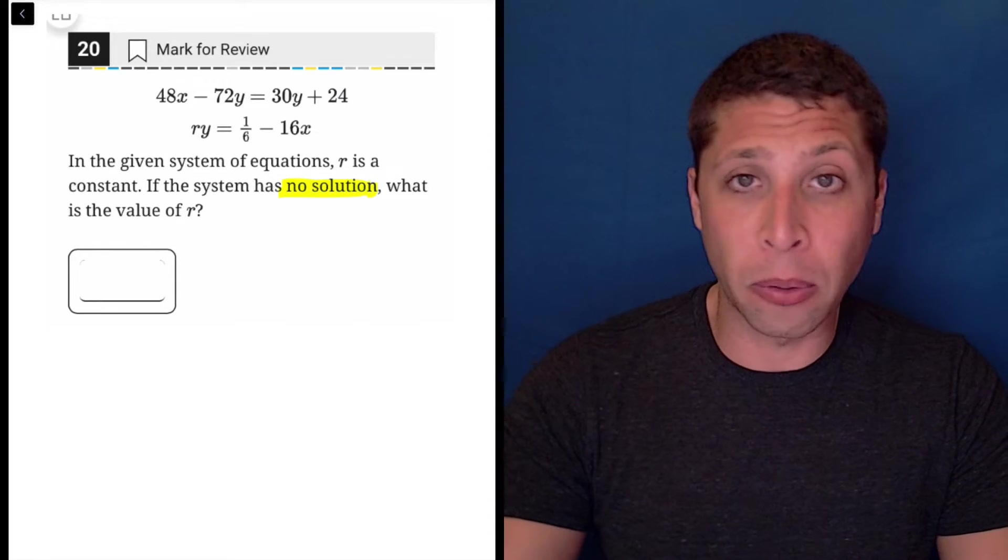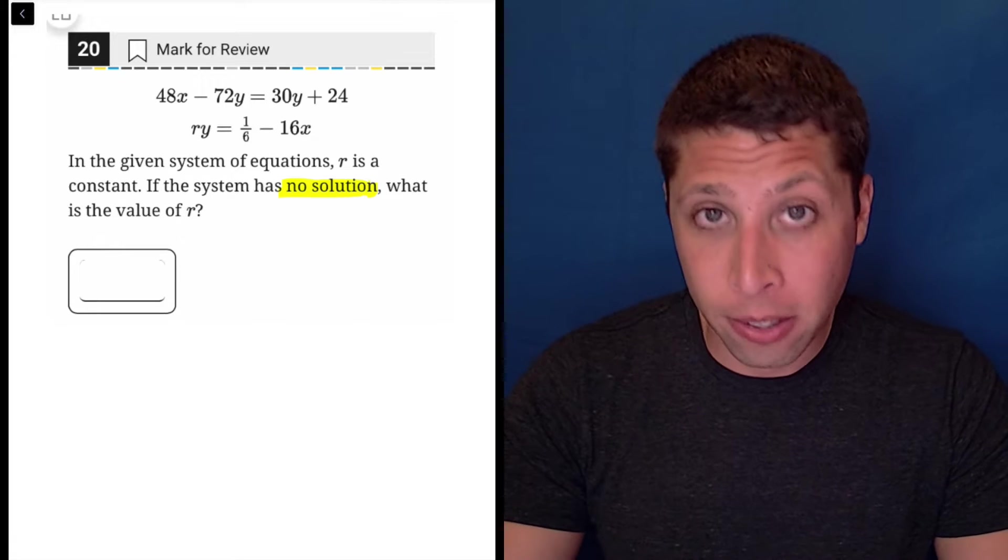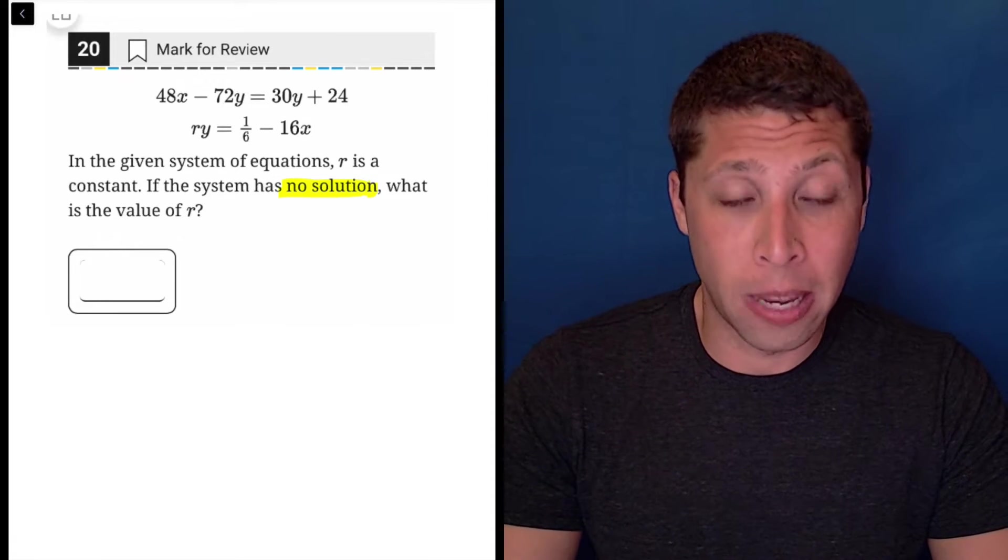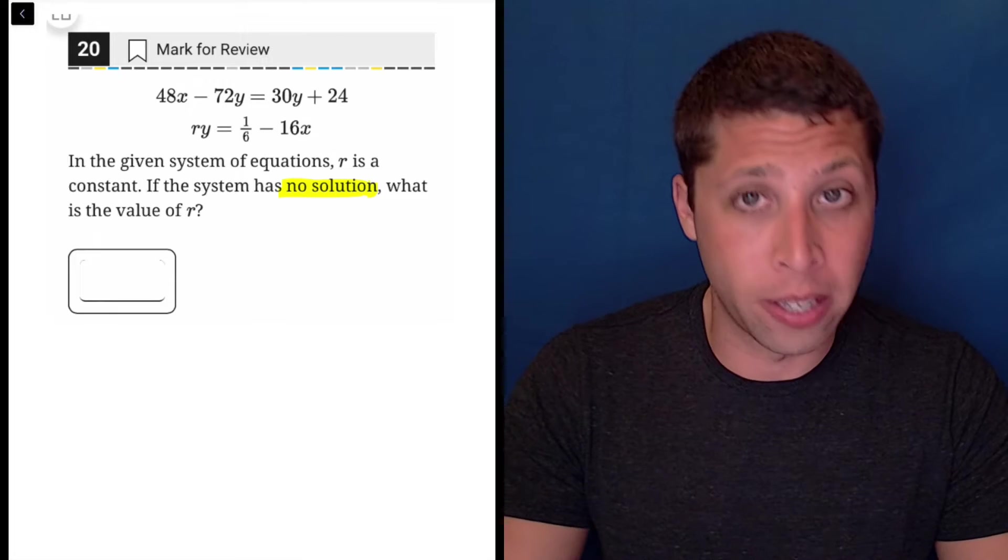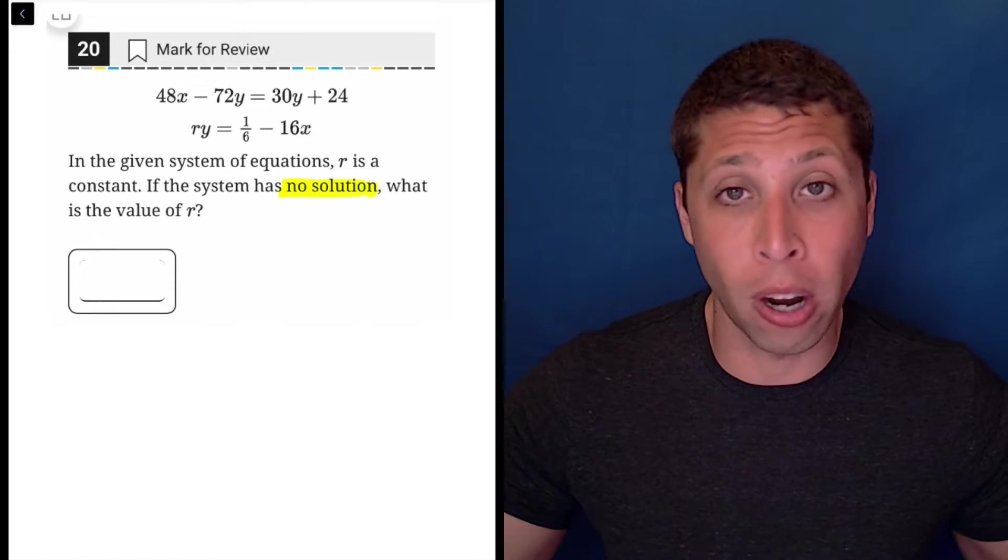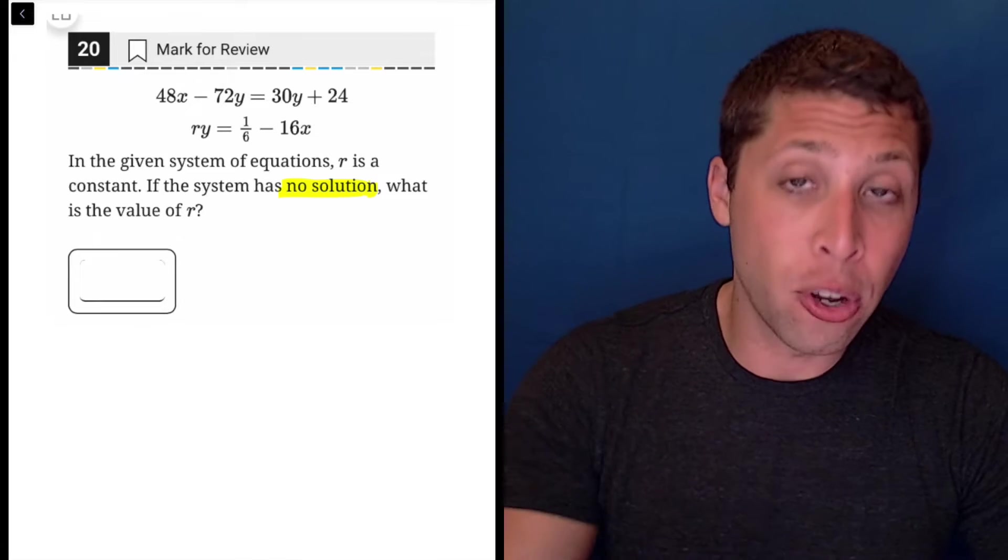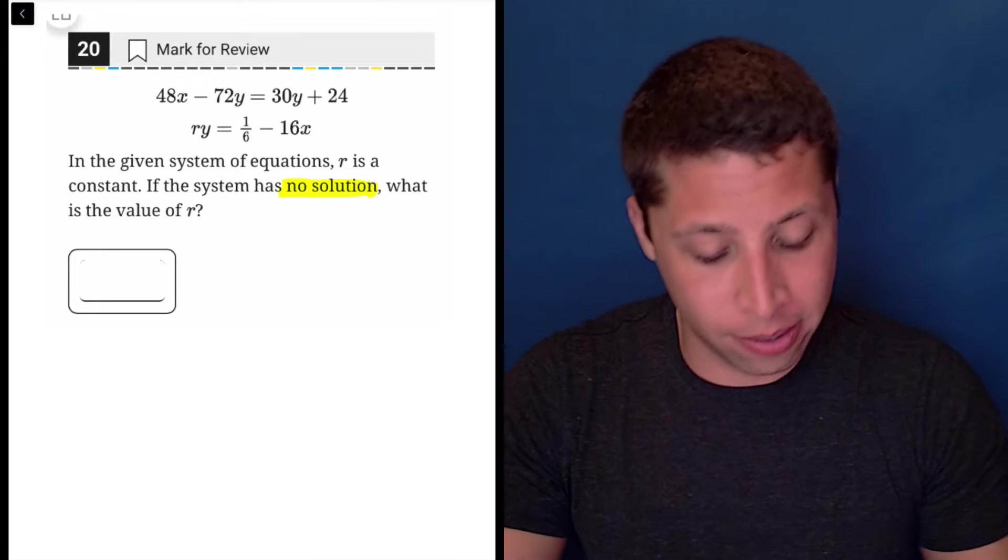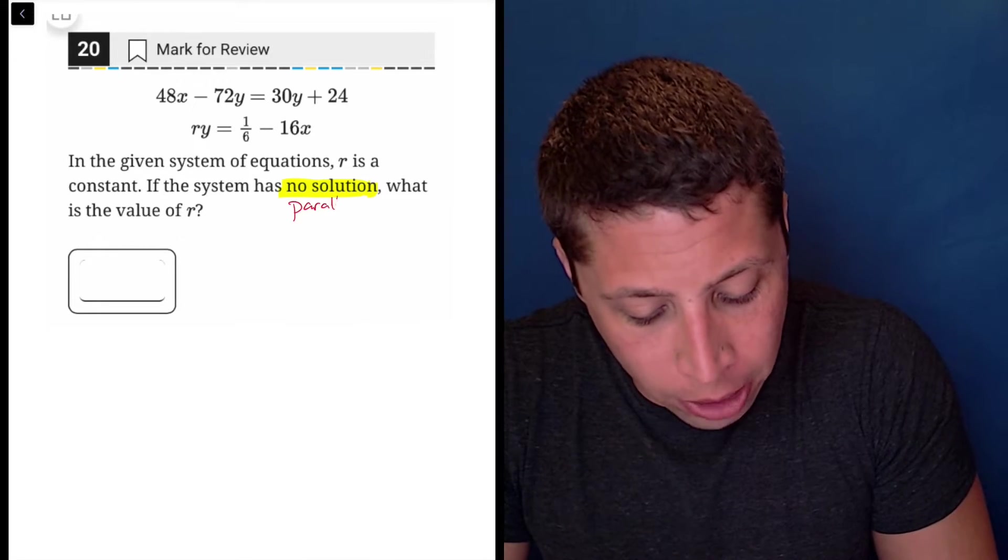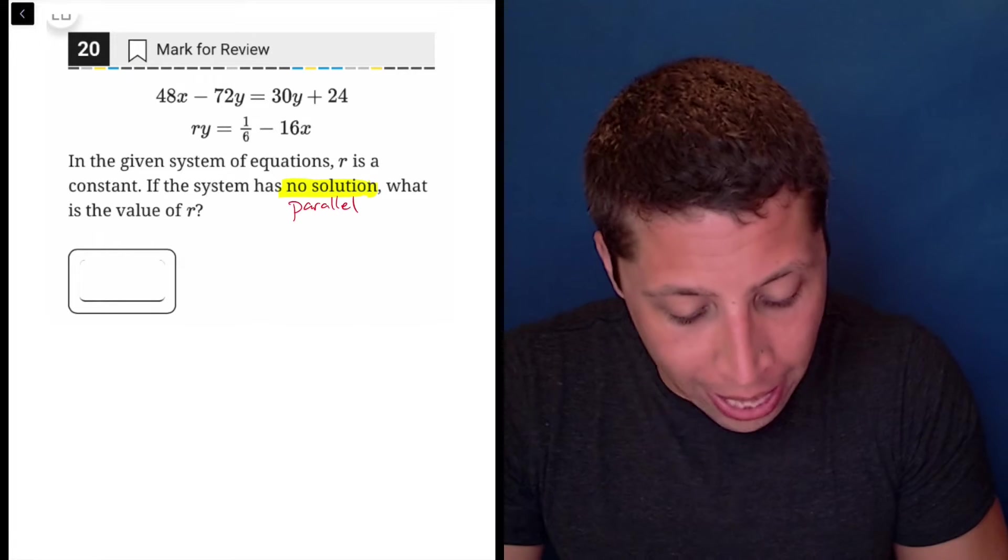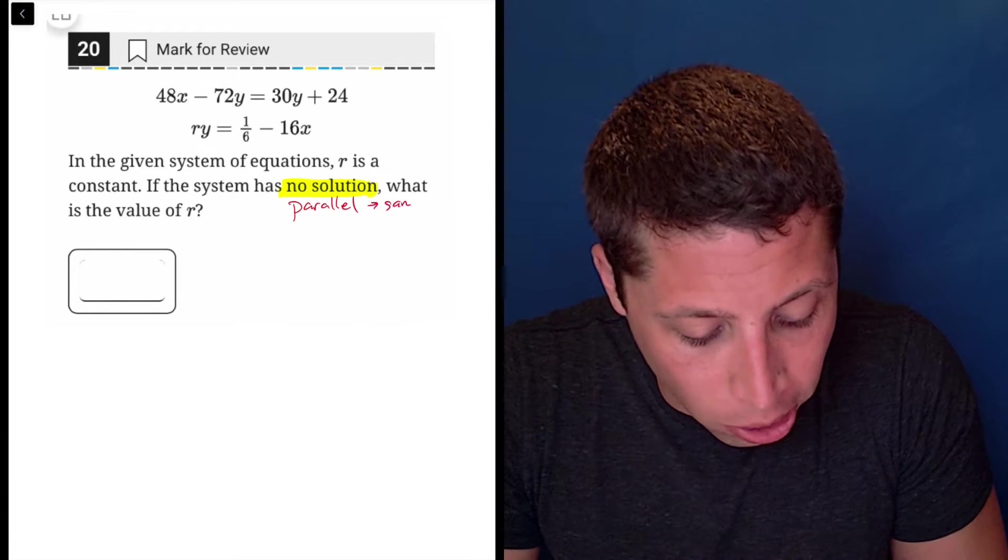Basically this system of equations is a set of lines. With lines, there are really only three possibilities. In most cases, they're going to intersect one time. Think of two lines. If you draw two random lines, they're going to cross at some point. In order for them to have no solutions, that only happens when the lines are parallel. That only happens when they have the same slope.